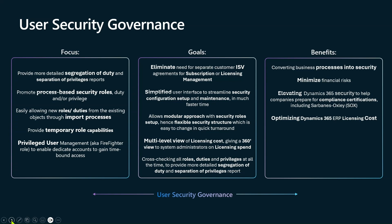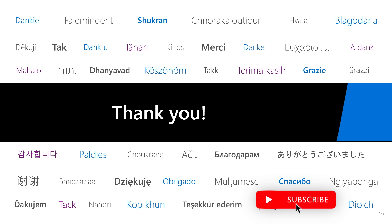A multi-level view of licensing cost gives a 360-degree view to system admins on licensing spend. The benefits we are getting include converting business processes into security, minimizing financial risk, elevating Dynamics 365 security to help companies prepare for compliance certifications including SOX, and optimizing Dynamics 365 ERP licensing cost. That's it for this video — we will come back in the next one. Thank you.